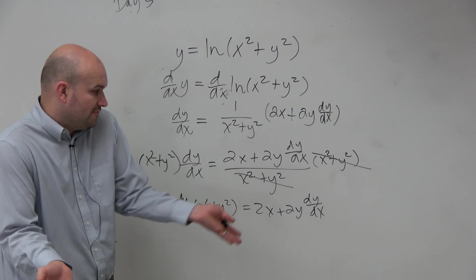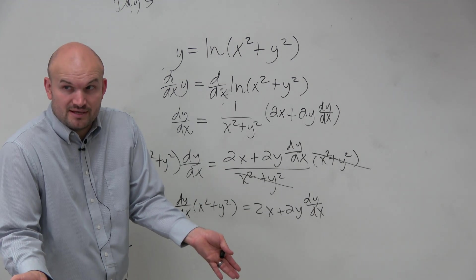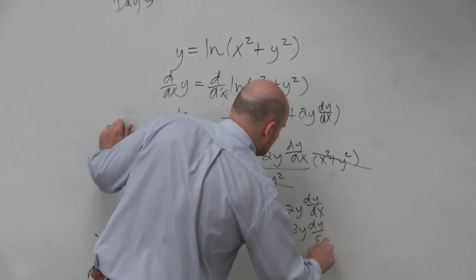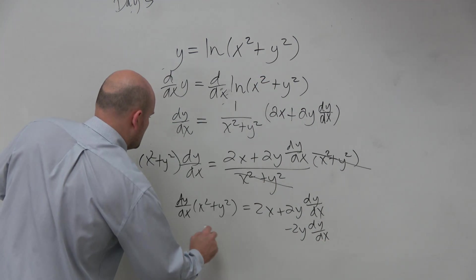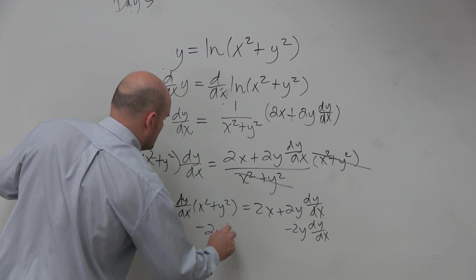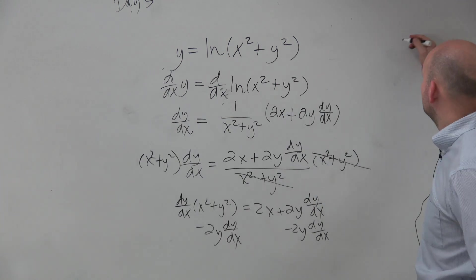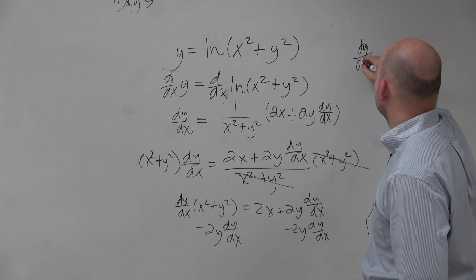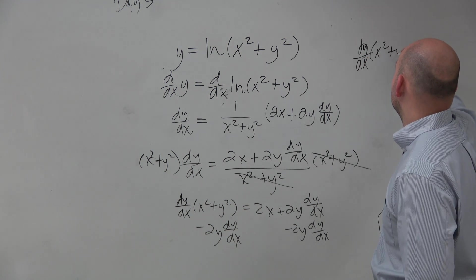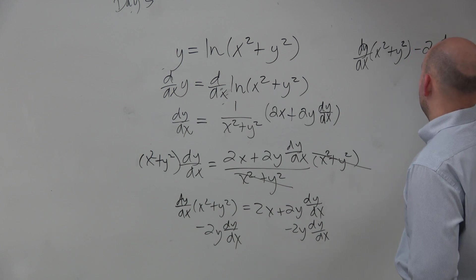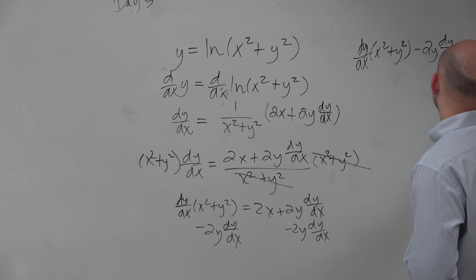So again, to solve for dy dx, you've got to get them on the same side, right? Everybody agree with me on that? So let's subtract this term. So therefore, I have dy dx times x squared plus y squared minus 2y dy dx equals 2x.